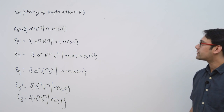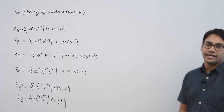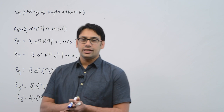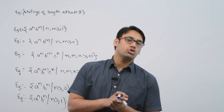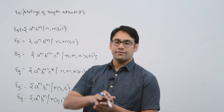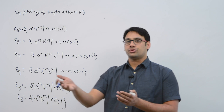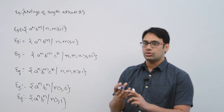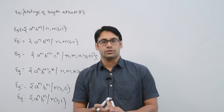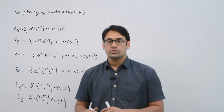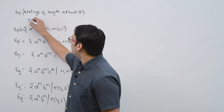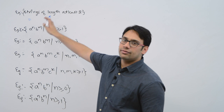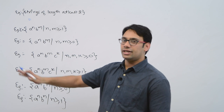The first example is strings of length at least 2, meaning the string length should be at least 2. We can have any string whose length is greater than 2 — length 3, length 4, length 5, and so on. So we can have a string of length 2 and then any length string after that.